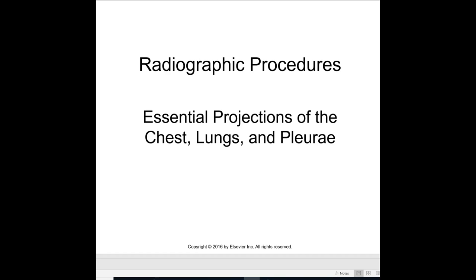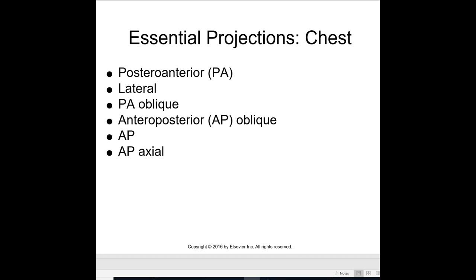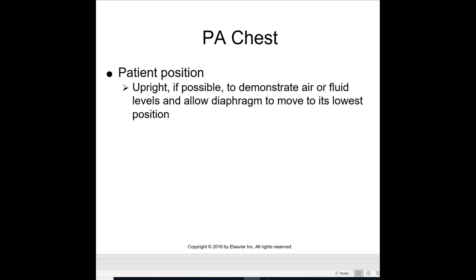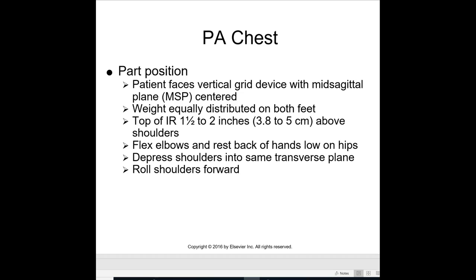Essential projections of the lungs are the PA, lateral, PA oblique, AP oblique, AP, and axial — but we're just going over the PA and the lateral. Use 14 by 17, collimated to patient size. PA is upright if possible to demonstrate air or fluid levels and to allow the diaphragm to move to its lowest position. The patient faces the vertical grid with the mid-sagittal plane centered and weight equally distributed on both feet. The top of the IR is one and a half to two inches above the shoulder. Flex elbows and rest the back of the hands low on the hips. Depress the shoulders into the same transverse plane and roll the shoulders forward. The CR goes through the inferior portion of the scapula at the level of T7.